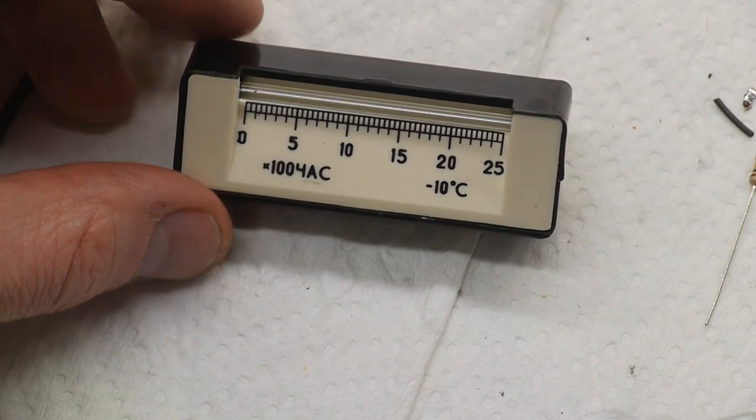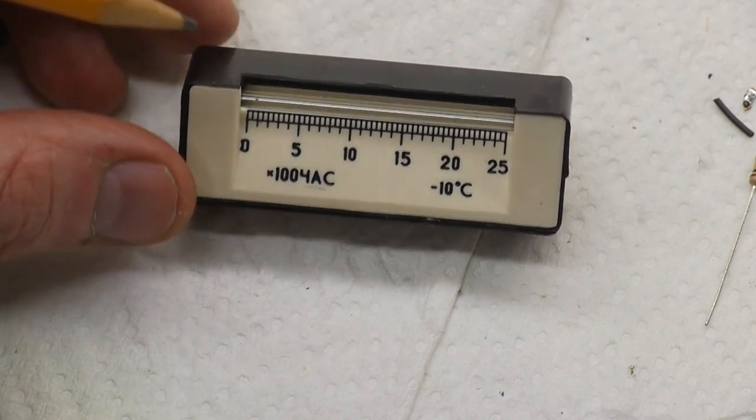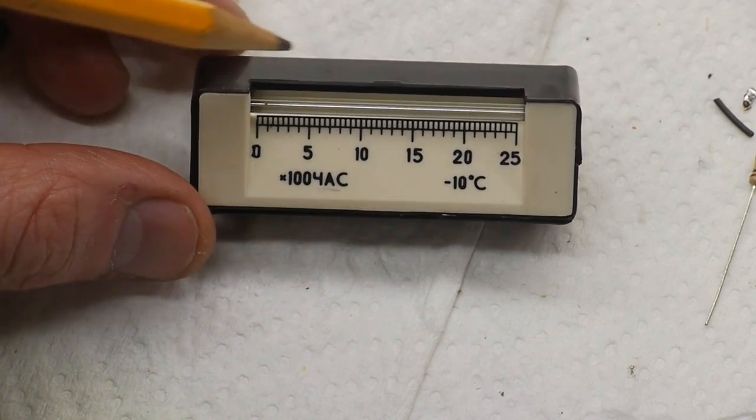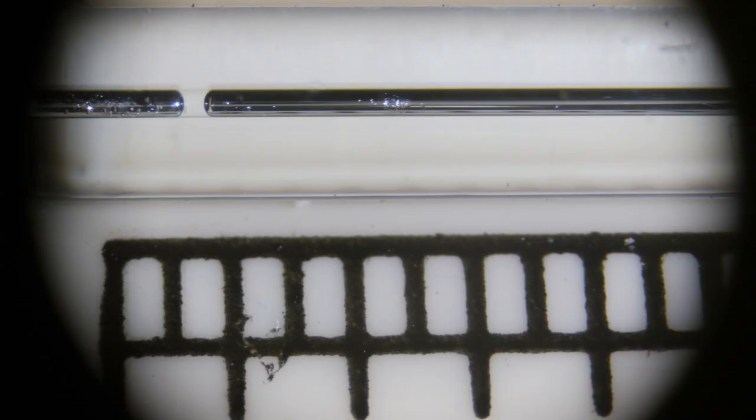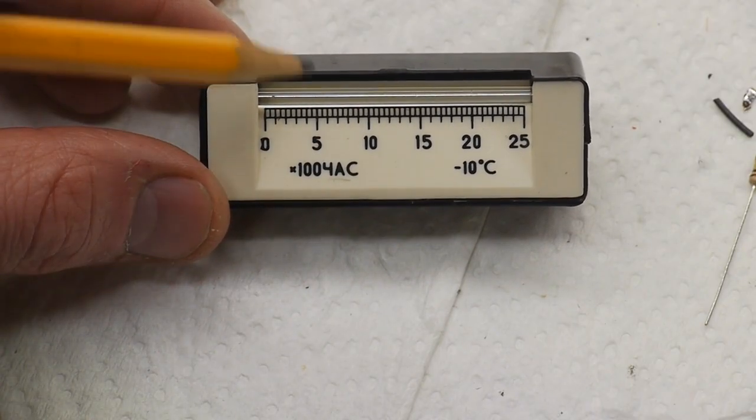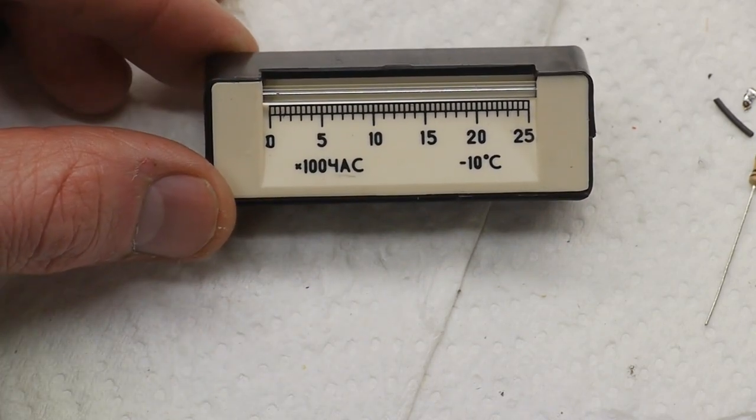and it's also completely passive. And the way it works is it has this thin glass tube that has mercury in it, but notice there's a little gap right here, and this is where you read the meter. So this is times 100, and this is the Russian word for hour. So 500 hours, the full scale is 2500 hours.